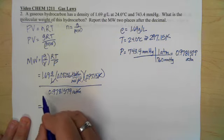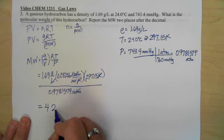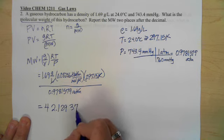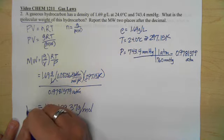So when we run the math we're going to get 42.12937 grams per mole for our molecular weight.